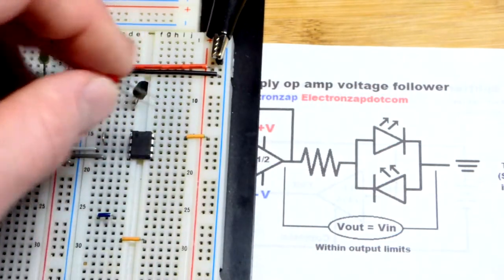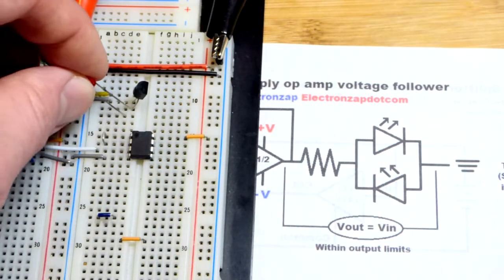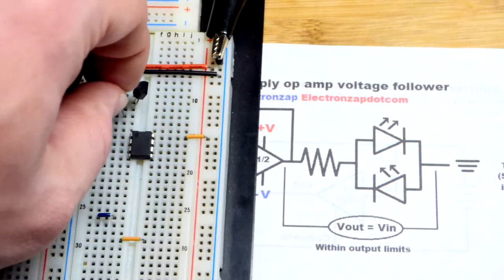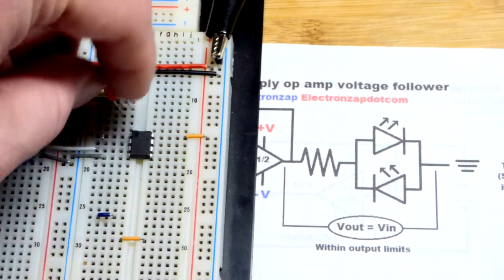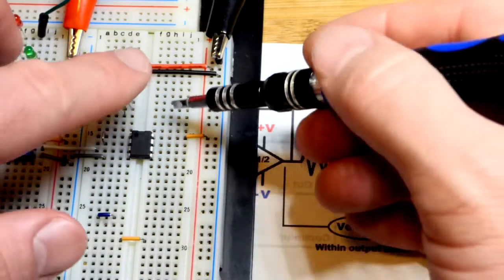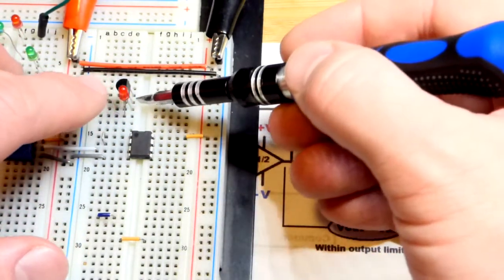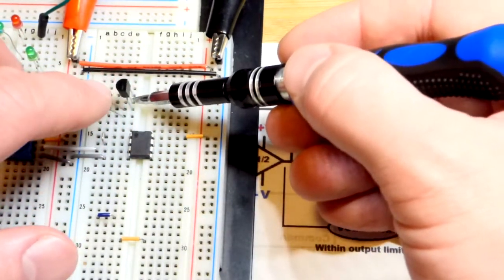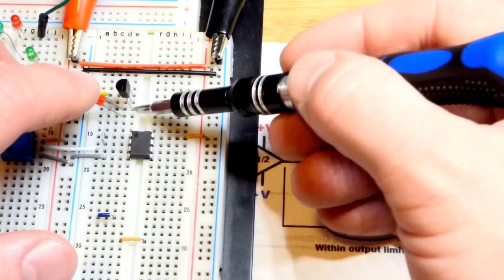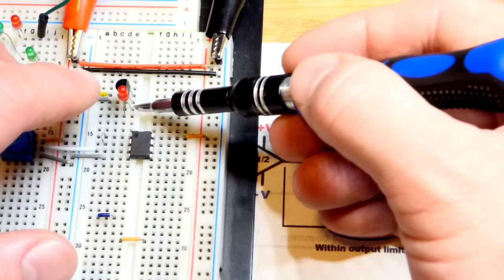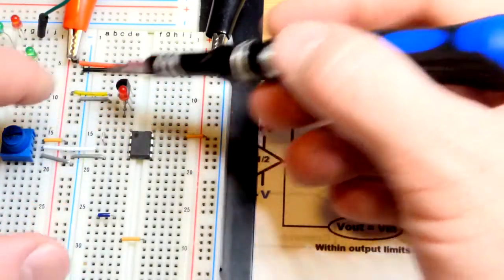I have my rail splitter up here. I'm going to put the shorter lead to the output of the rail splitter. So this is the TLE2426. The top pin is the in pin, the middle pin is the common pin right there, and we have our out pin which is going to be half of the supply voltage.